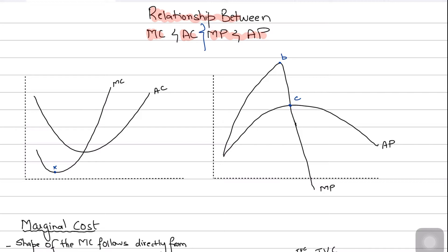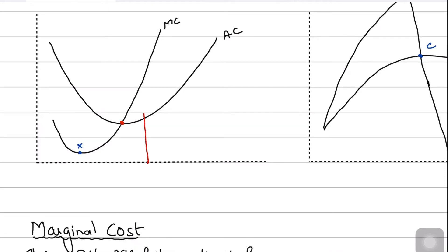The reason the average cost curve is U-shaped is that initially the marginal cost is falling, which pulls the average cost down. The marginal cost intersects the average cost curve at its lowest point. After that, since marginal cost exceeds average cost, each additional unit costs more than the average, which pulls the average cost up.